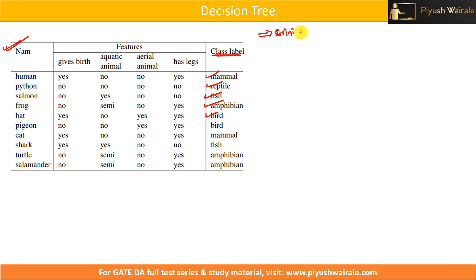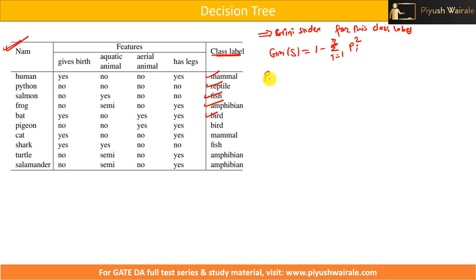To find the Gini Index, we apply the formula: 1 minus summation of PI squared. PI is the probability of each class in the entire dataset. We have a total of 10 instances. The number of mammals is 2, so P(mammal) = 2/10. Similarly for reptile, we divide the number of reptile instances by the total — which gives 1/10.